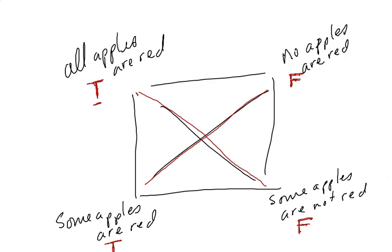So now we have the square looking a little bit different in terms of truth value. Because of where we started, we started with the universal affirmative. Now, let's try one more iteration of this.